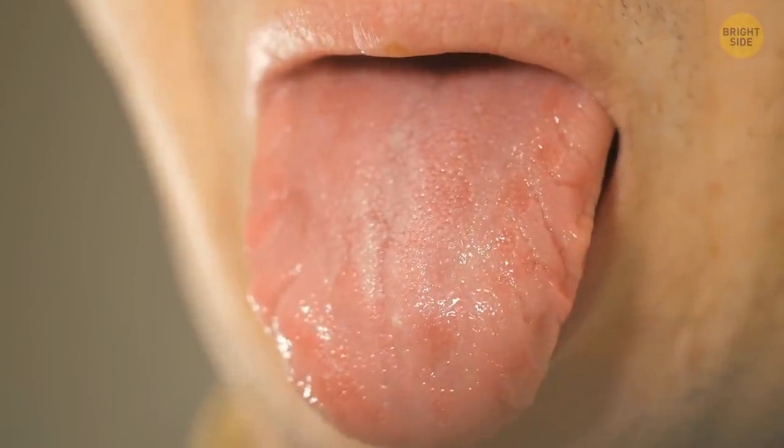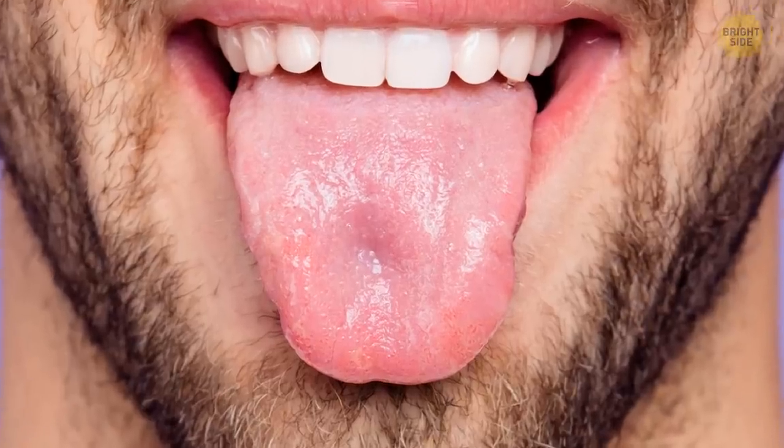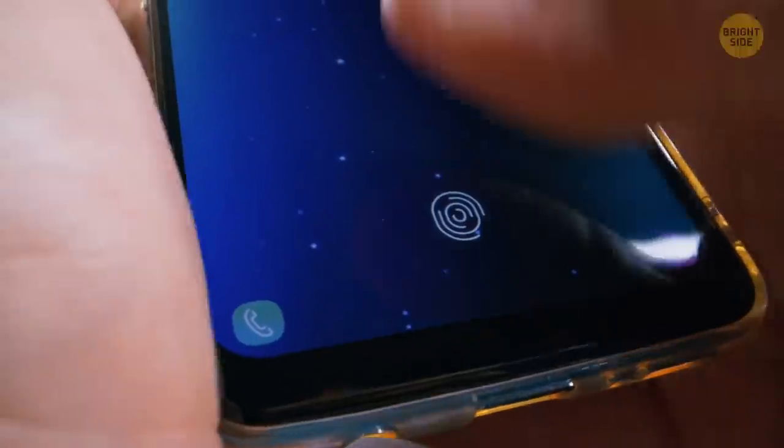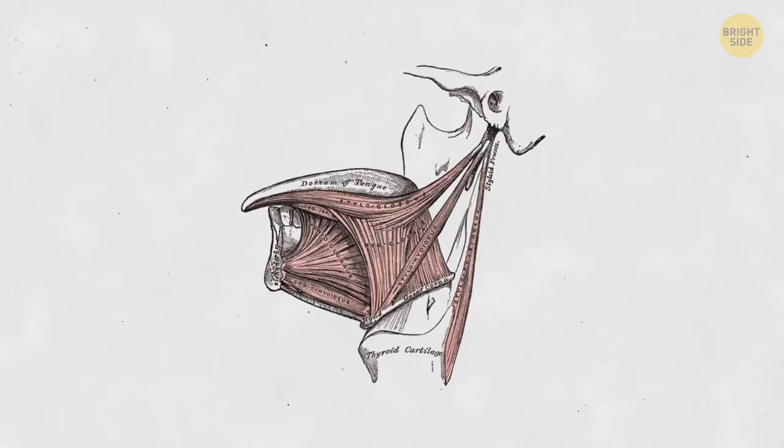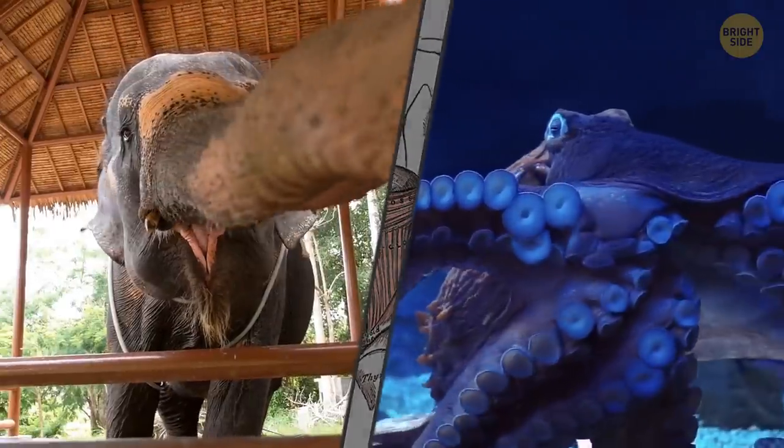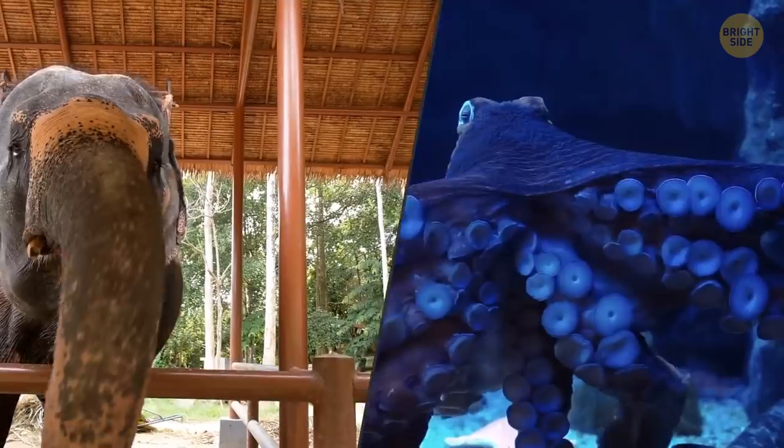Tongue print is unique, just like a fingerprint. We all have different patterns on our tongues. Not even twins have identical ones. That means we can use our tongue for biometric authentication, just like our fingers. One more cool thing about our tongue, it has eight interwoven muscles. Their structure is quite similar to an octopus's tentacle and the ones elephants have in their trunks.